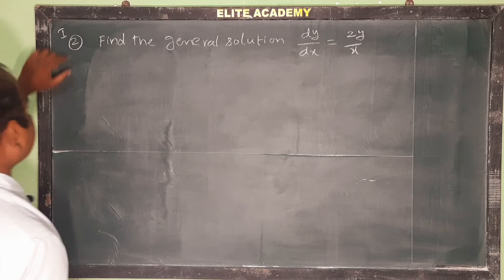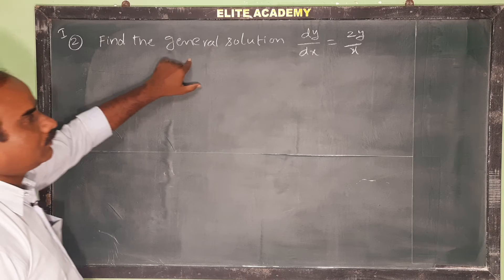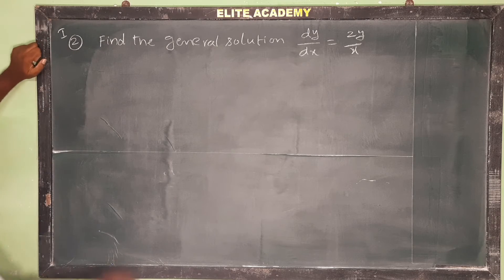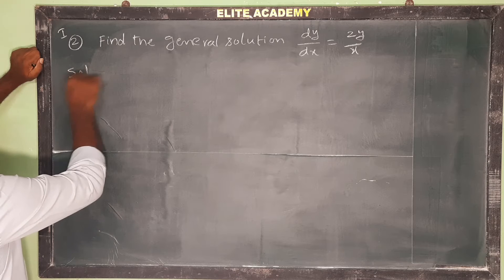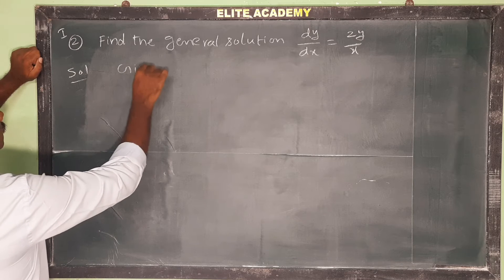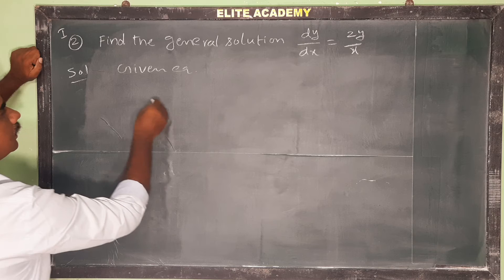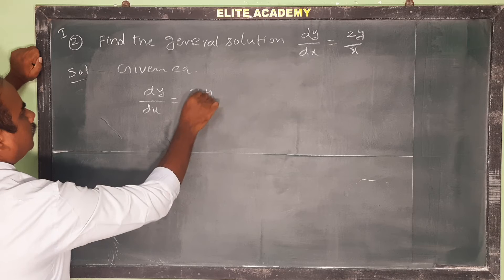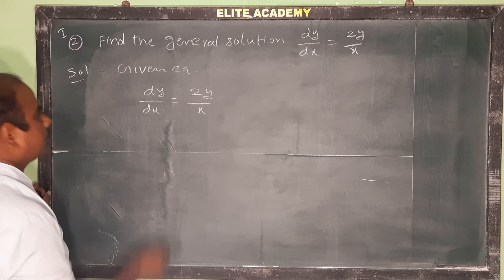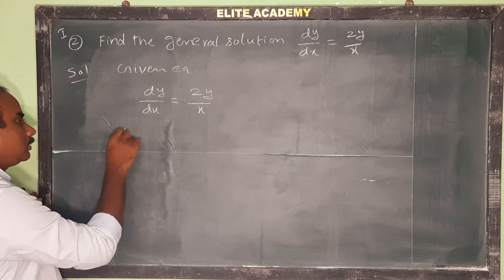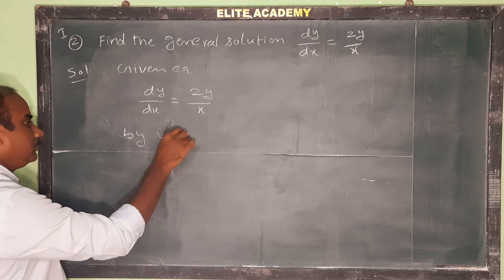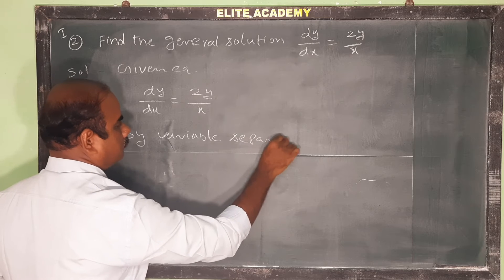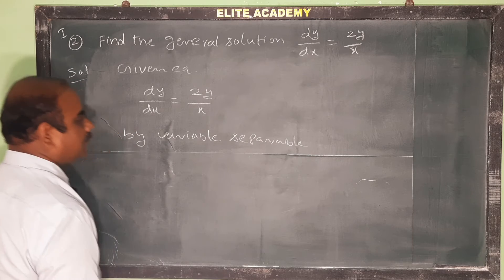Roman number one, second question: find the general solution of dy/dx = 2y/x. This is our question. Given equation: dy/dx = 2y/x. We will use the variable separable method.